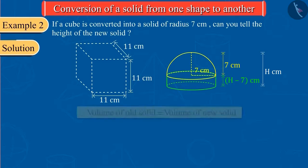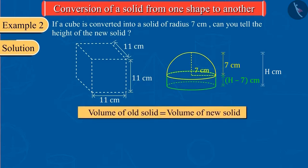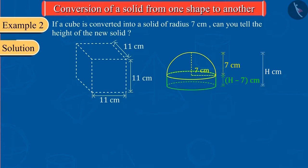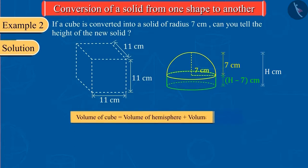We know that while converting one solid into another solid, the volume of both solids remains the same. So, the volume of the cube here will be equal to the sum of the volumes of the hemisphere and the cylinder. On substituting all values and solving them,